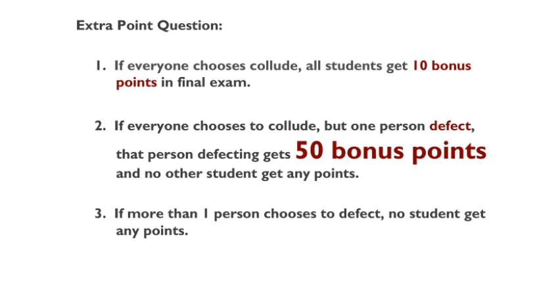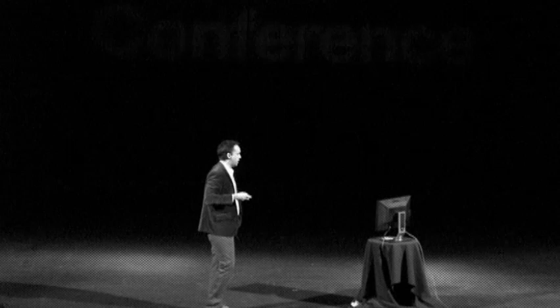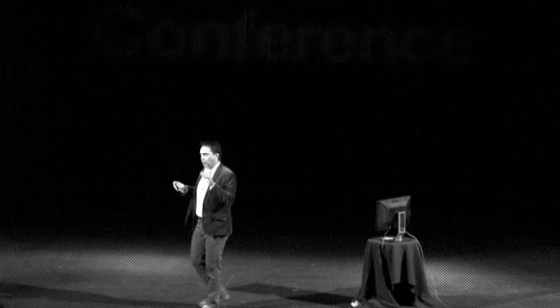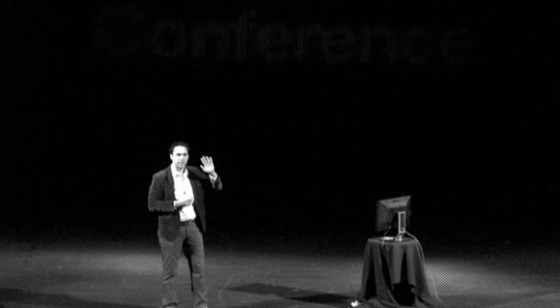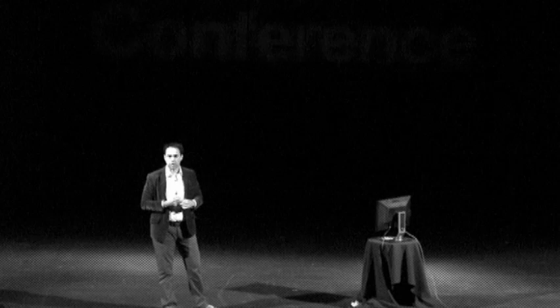If everyone colludes, everyone gets 10 points on the exam. If everyone colludes and one person defects, that person gets 50 points on the exam — and these are real points, I will give them. The catch is that if one person defects, no one gets anything. They vote with the clickers. If you're one of my students, you want that A bar to be 100% because that gives you 10 points. If you have any percentage on the B choice, you're really upset because someone took 10 points from you.